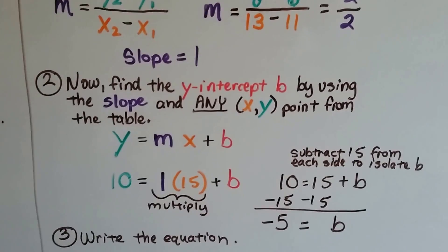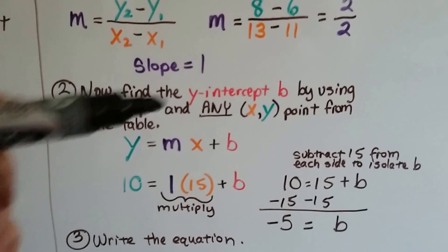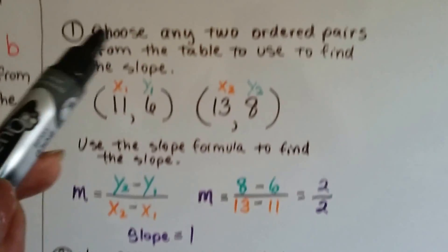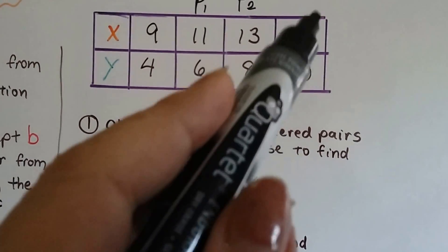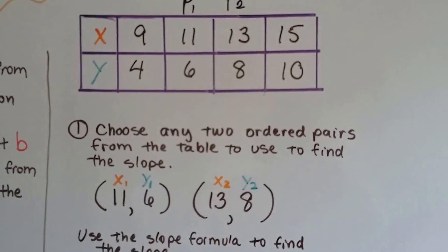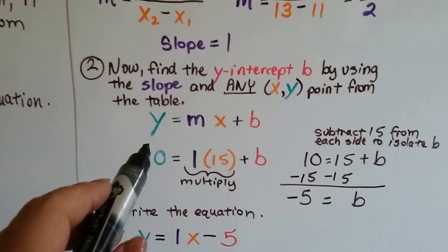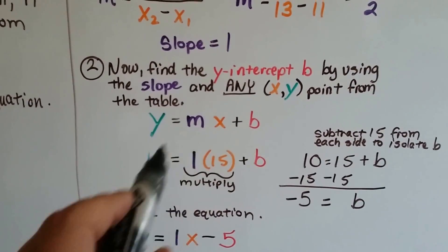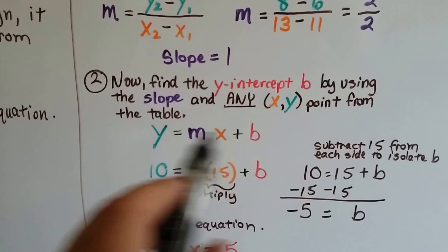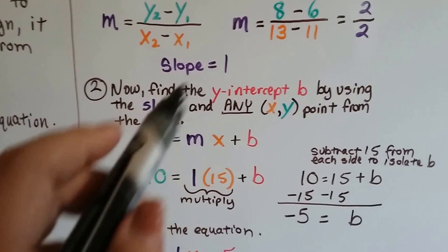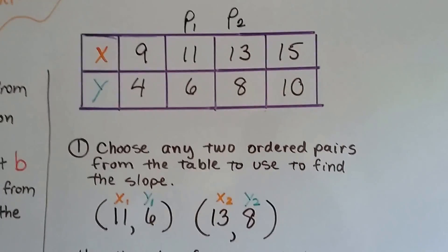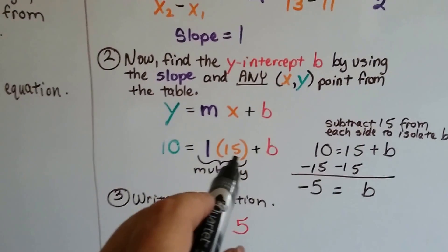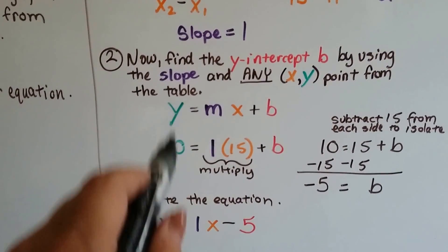Now we find the y-intercept b by using that slope, 1, and any xy point from that table. So we can choose any one we want. So I decided to go with the 15 and the 10 because I figured 10 is easy to multiply by. So I'm going to use the 15 and the 10 and plug them into this slope-intercept form of the equation. So we know the slope is 1, so I'm going to put that in the place of the m. And I'm using 15 for the x and 10 for the y. So I'm going to put 15 where the x goes and the 10 where the y is.